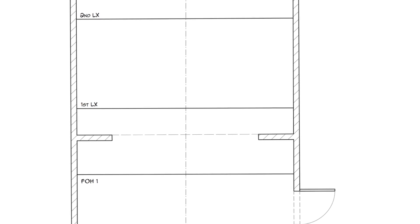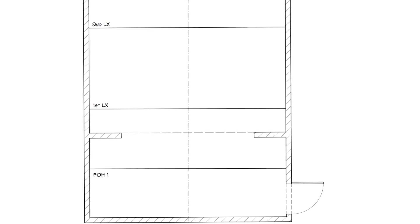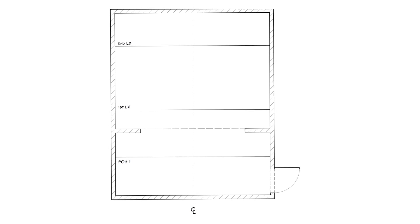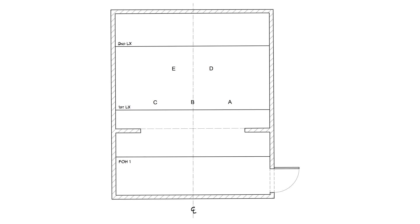The next step in creating a light plot is to insert focus points, or locations on the stage in which you want light. In this example light plot, there are five focus points labeled A through E. Notice that the labeling of the focus points goes from right to left, and not left to right. This is because the orientation of the focus points is based off of the stage direction's perspective, not the audience.